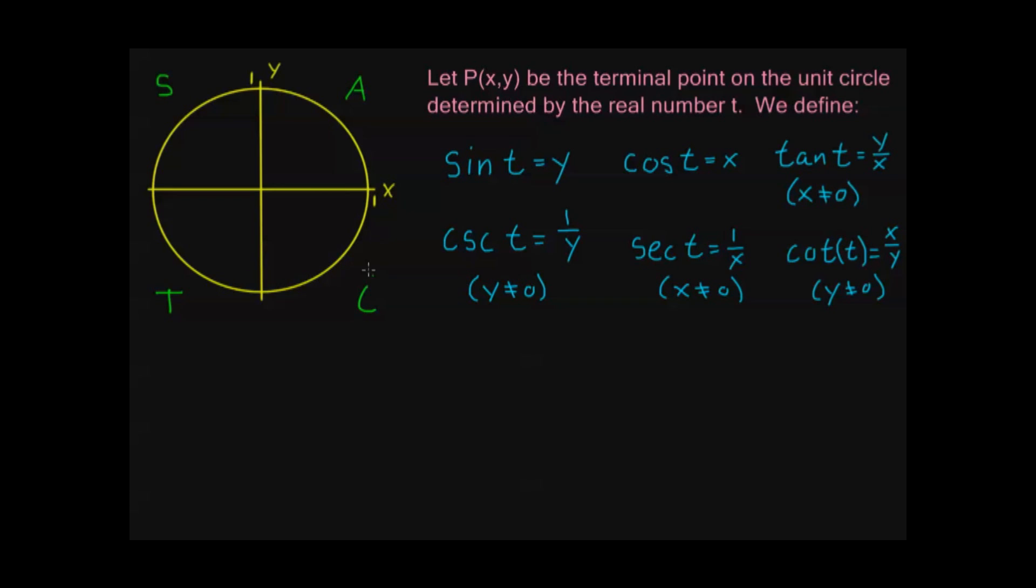And in quadrant four, I have cosine. That means that cosine is positive. And also it follows, then, that secant is positive.